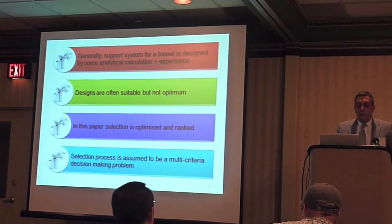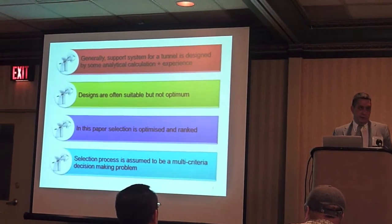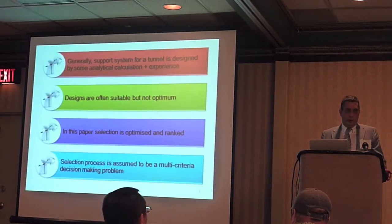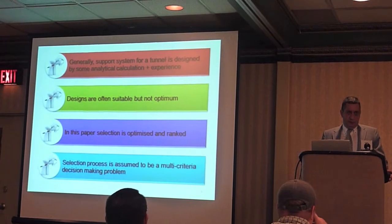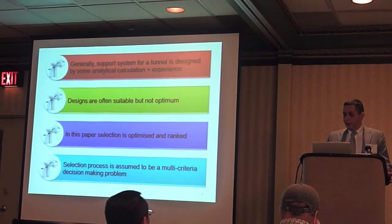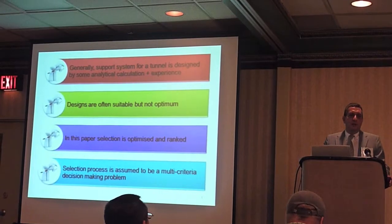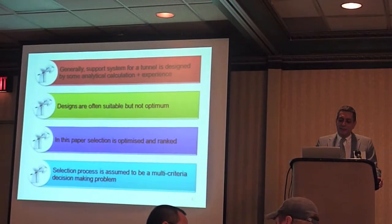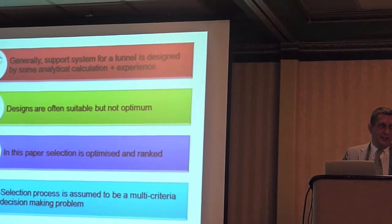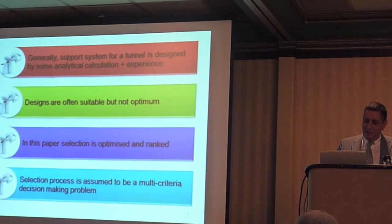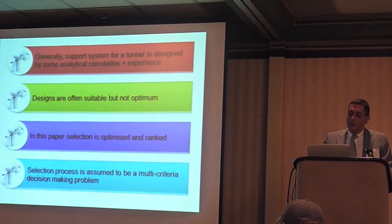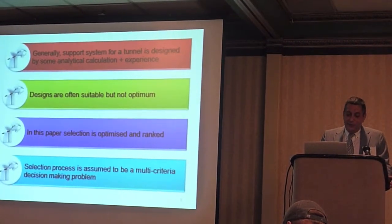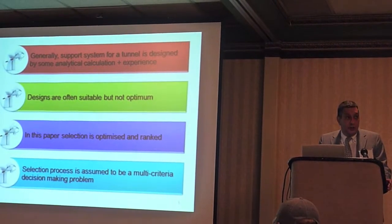What is of most importance here is that designs — the designs that we all make — are often suitable. They are suitable, no doubt about it. They are good, they support the tunnels. But we cannot be sure that they are always economically optimum. This is what multi-criteria decision-making methods do: they optimize, they show the optimum, or rank and give a ranking between different suitable methods.